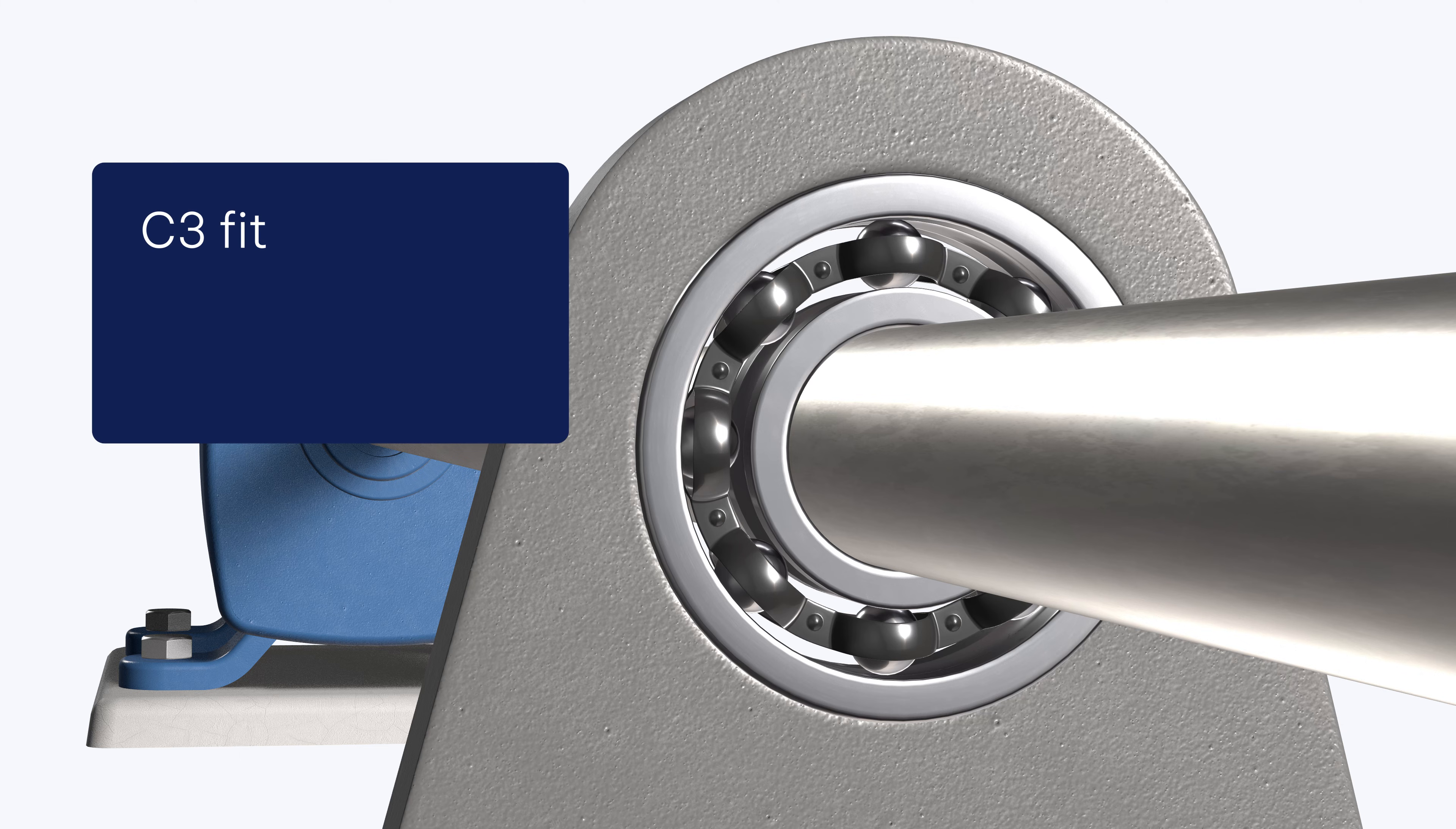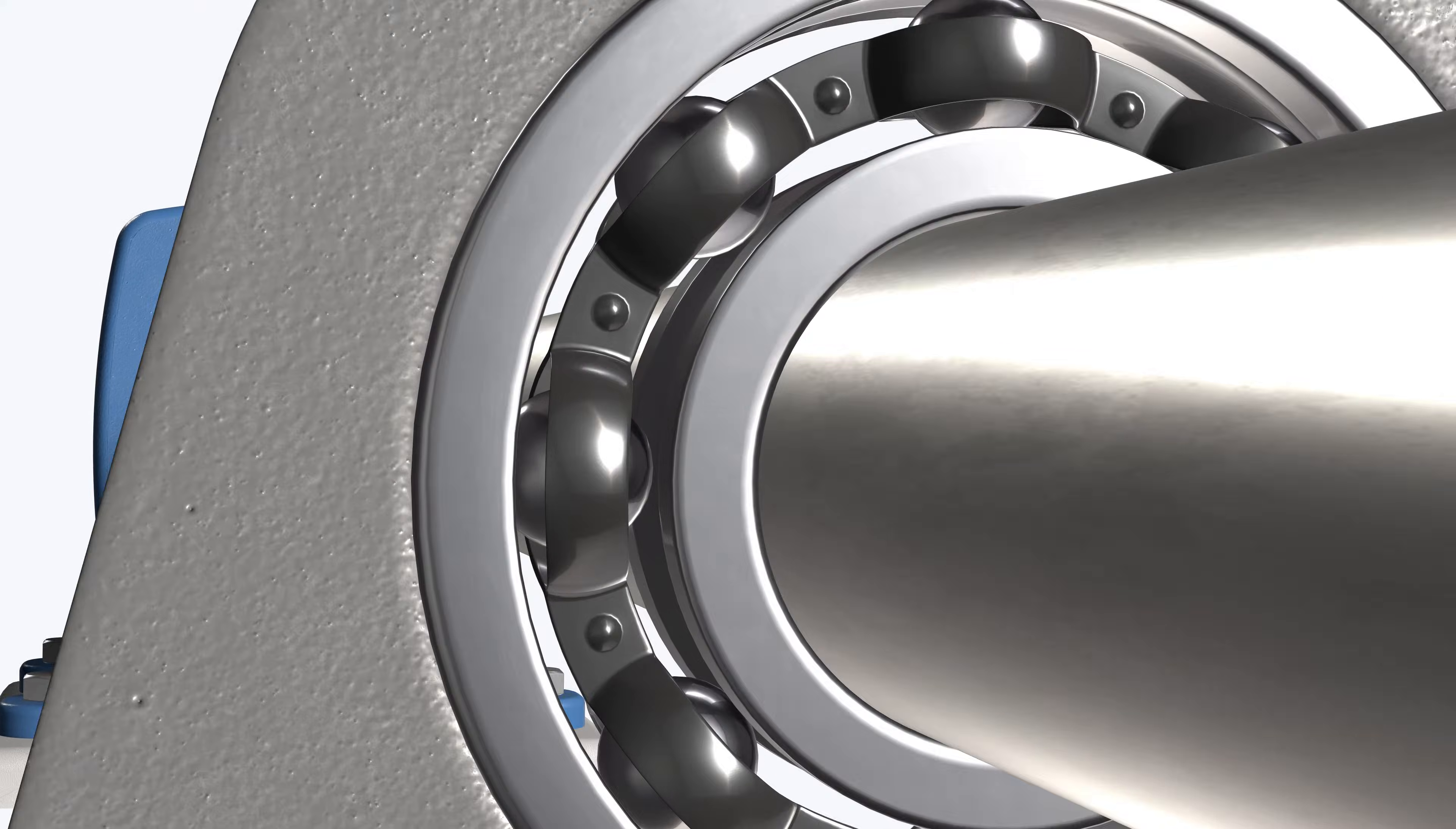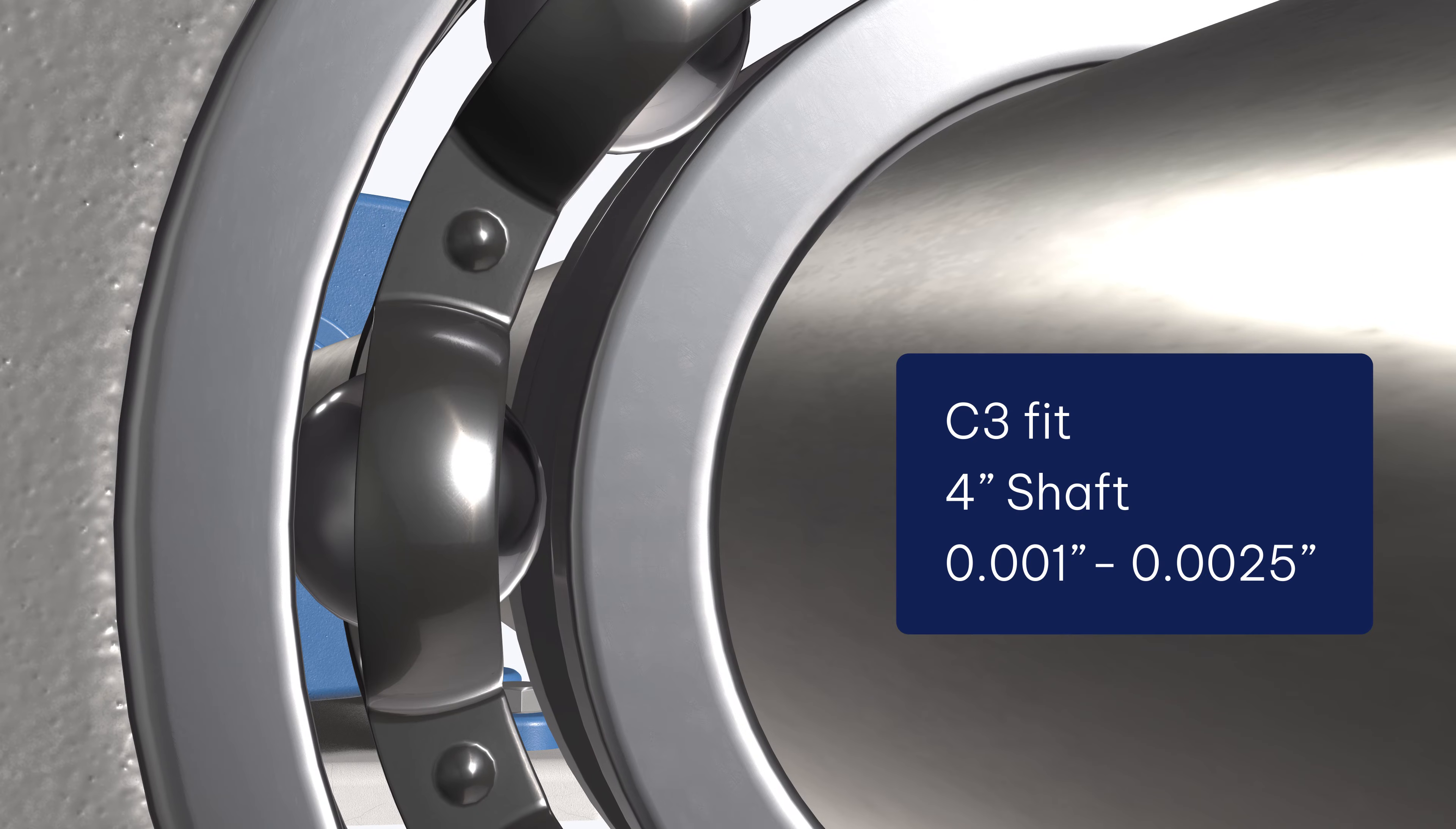With a C3 FIT and 1 inch diameter shaft, the clearance is between 0.5 thou and 1 thou. With a C3 FIT and a 4 inch diameter shaft, the clearance is much larger, between 1 thou and 2.5 thou.